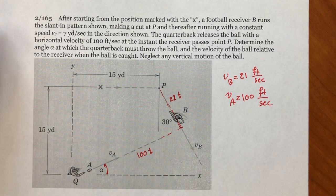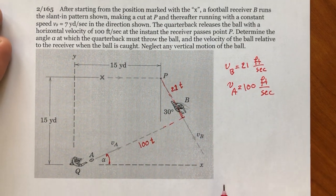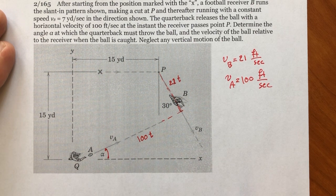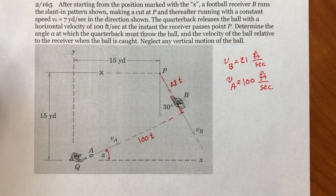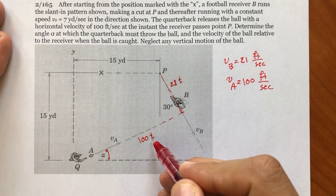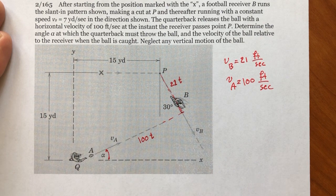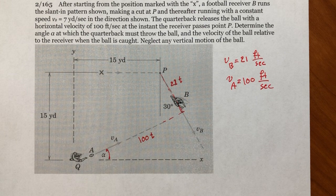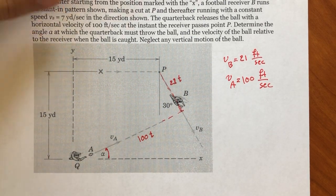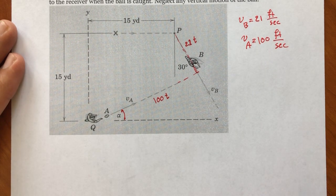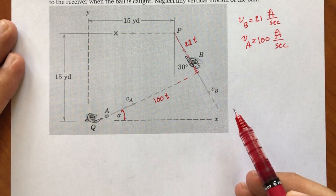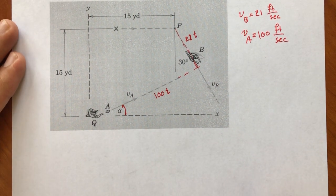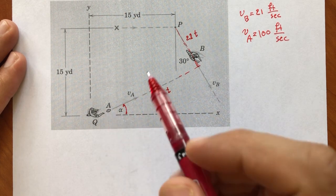We are assuming both speeds are constant. We have two unknowns: time t and angle alpha. So we need two algebraic equations to find them, and we can construct those two equations using geometry.